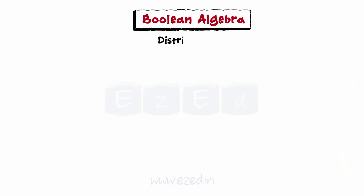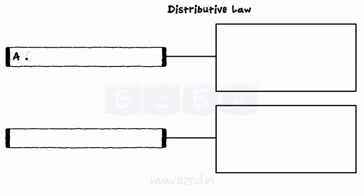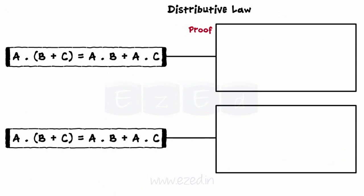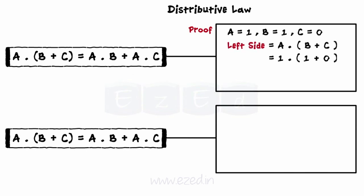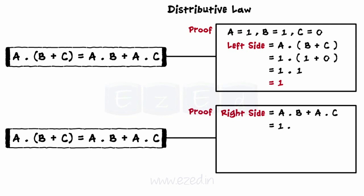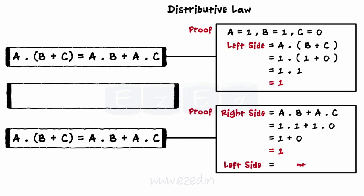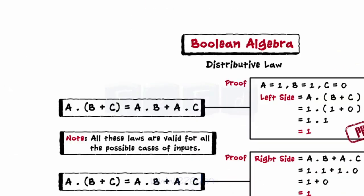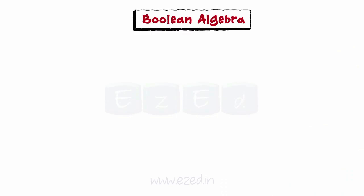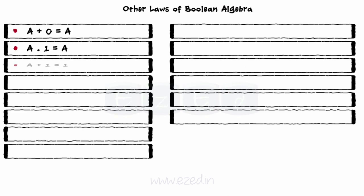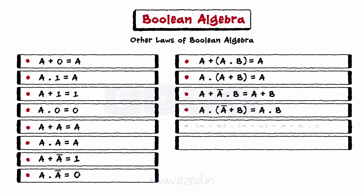The next law is the distributive law: a dot (b plus c) equals (a dot b) plus (a dot c). Assuming a equals 1, b equals 1, and c equals 0, the left side equals 1 dot (1 plus 0) equals 1 dot 1 equals 1. The right side equals 1 dot 1 plus 1 dot 0 equals 1 plus 0 equals 1. As left side equals right side, the distributive law is proved. Apart from these basic laws, there are many other laws of Boolean algebra, which are very widely used, but we won't see their proofs as they are very simple to prove.